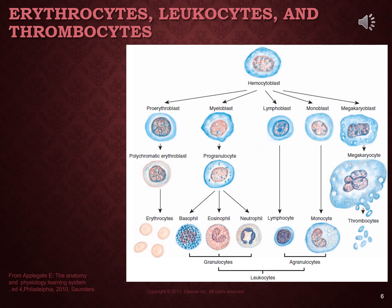All blood cells trace their beginnings to a specific type of bone marrow cell — the stem cell. Stem cells are unspecialized cells that give rise to immature red blood cells, white blood cells, and platelets. From the hemocytoblast or stem cell at the top, it can become a proerythroblast for red cells, a myeloblast that produces basophils, eosinophils, and neutrophils, a lymphoblast that becomes a lymphocyte, a monoblast that becomes a monocyte, or a megakaryoblast that eventually becomes a platelet. All of these cell lines differentiate from that one single type of cell.